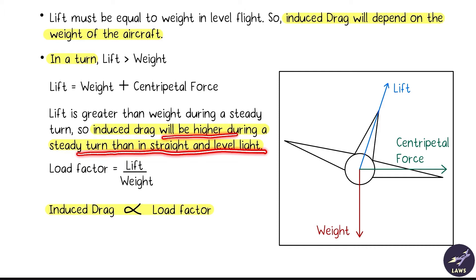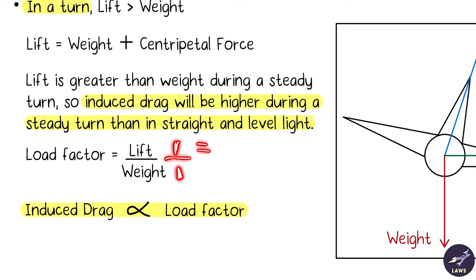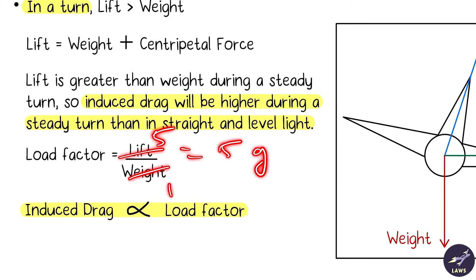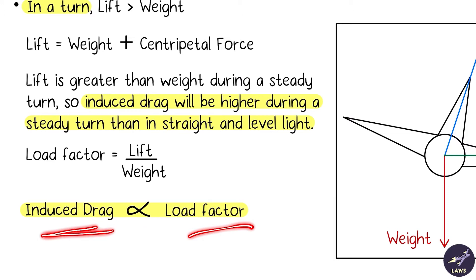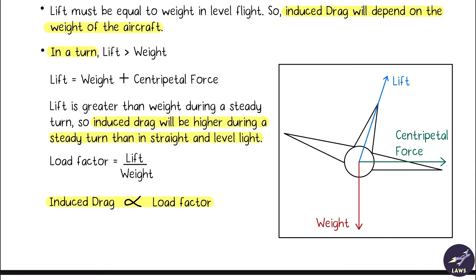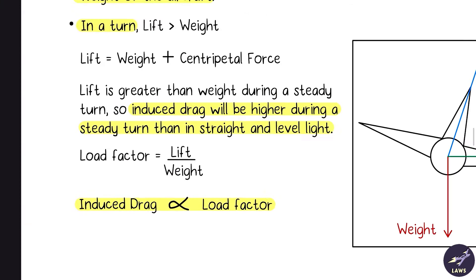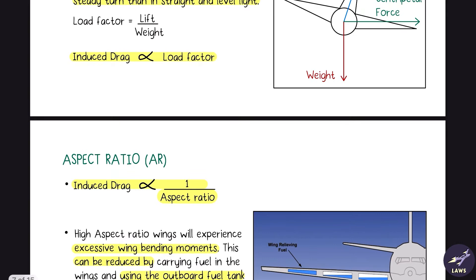Induced drag is also higher during a steady turn than in straight and level flight. Load factor is the ratio of lift to weight: equal lift and weight is 1g, lift two times weight is 2g, and so on — similar to the g-force tests seen in military pilot videos. Greater the load factor, greater the induced drag. Load factor increases in a turn. The next component affecting induced drag is aspect ratio.